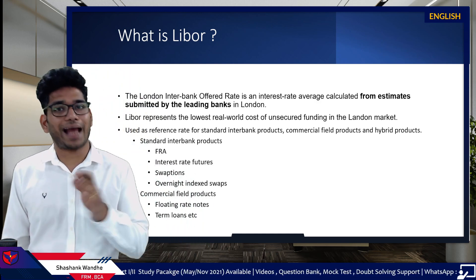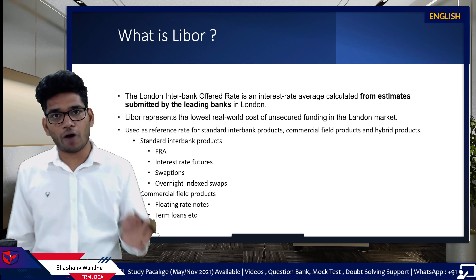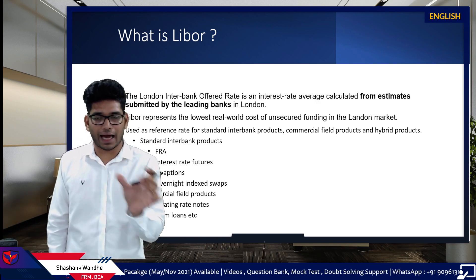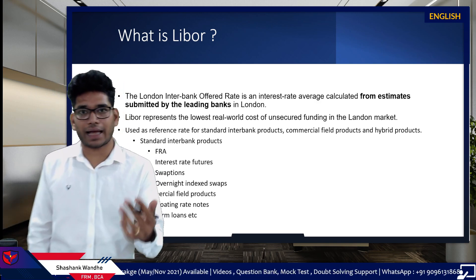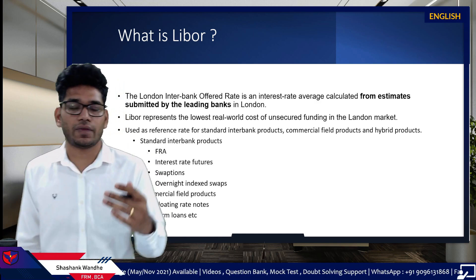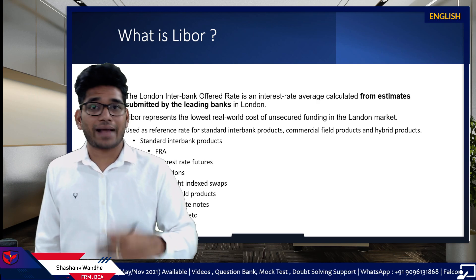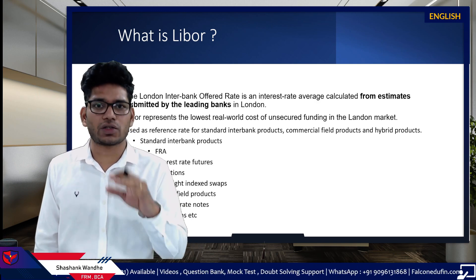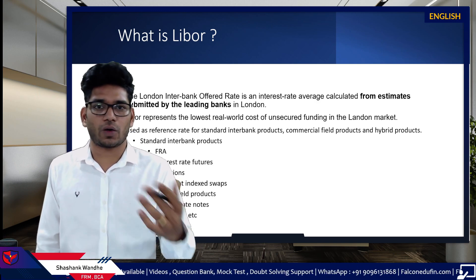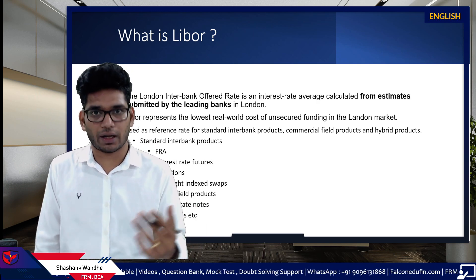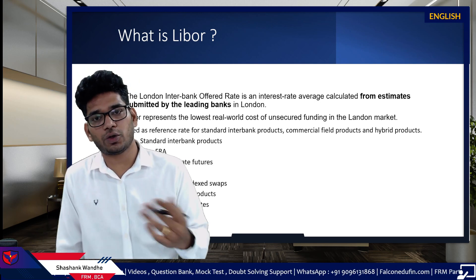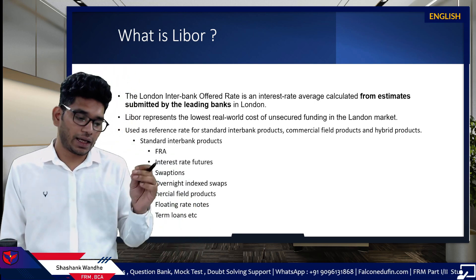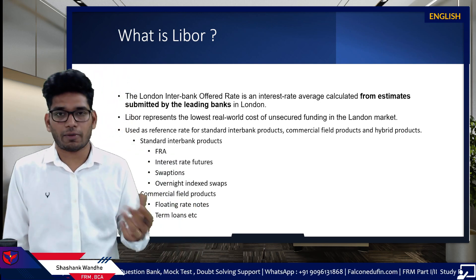So what is LIBOR? LIBOR is the IBOR — the Interbank Offered Rate. LIBOR is calculated based on the leading banks' reports. There are panel banks who report the rate at which they would be able to borrow a particular sum of money.